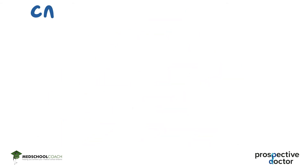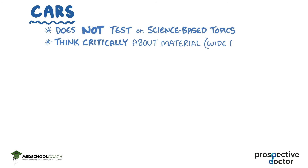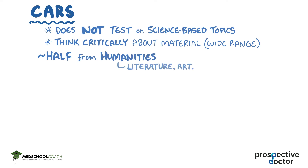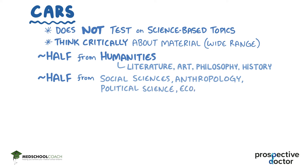The CARS section is a little different in that it doesn't test you on science-based topics, but instead asks you to think critically about material from a wide range of disciplines. About half of the questions come from texts in the humanities, like literature, art, philosophy, and history. The other half come from texts in the social sciences, like anthropology, political science, or economics.